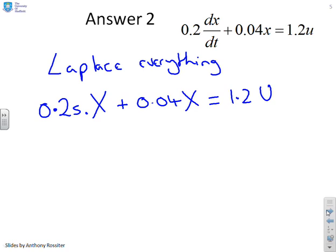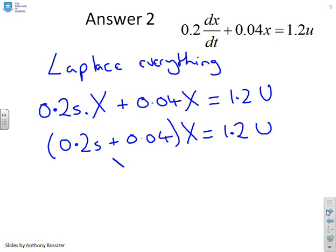Again, I can group common terms and write (0.2s + 0.04) into capital X equals 1.2 into U. And now rearrange to get X = 1.2/(0.2s + 0.04) into U. Now, the final step is quite common to write the denominators as monic. So we want the coefficient of this s to be 1. So in order to do that, I'm going to multiply top and bottom by 5.